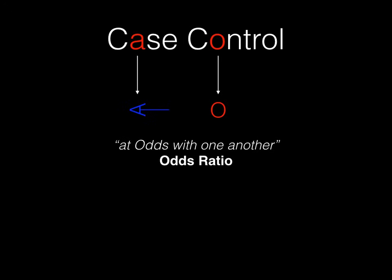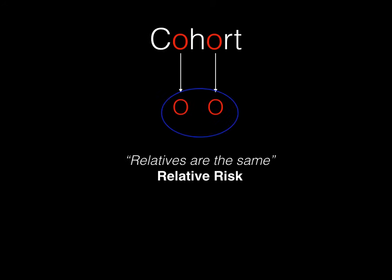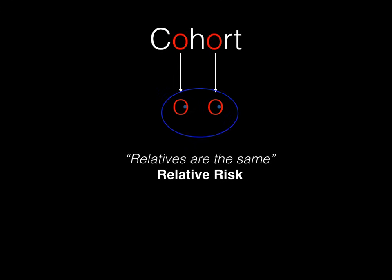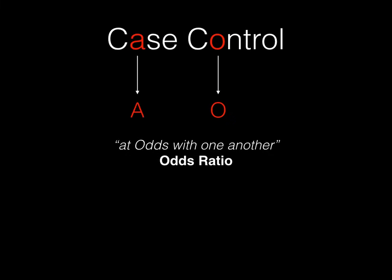To summarize: we started with the cohort, isolated the O's, and said the O's are the same just like relatives, so it gives you the relative risk. We drew a face around those O's and the eyes were looking forward, telling us cohort is a prospective study. We contrasted that with case control, where the A and the O are different — they are at odds with one another, giving you the odds ratio. We flipped the A sideways and drew a tail on it to remind us that case control is a retrospective study.